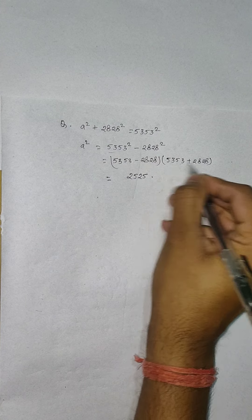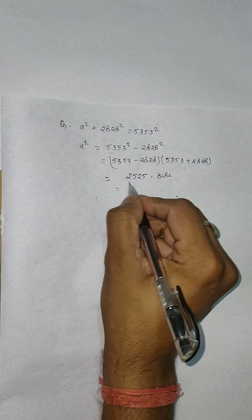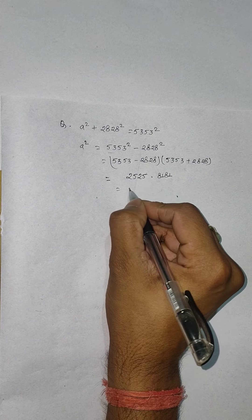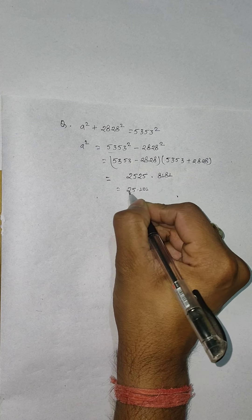Can I write this equation as 2525 = 25 × 101? Because when we multiply 25 times 101 it becomes 2525.